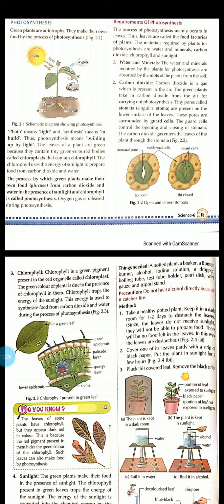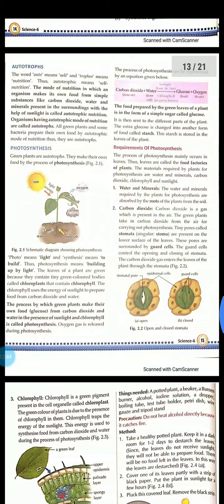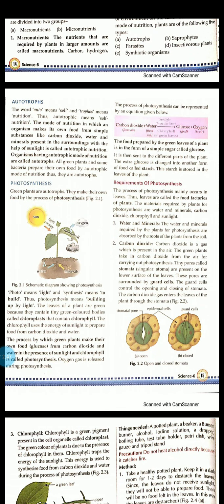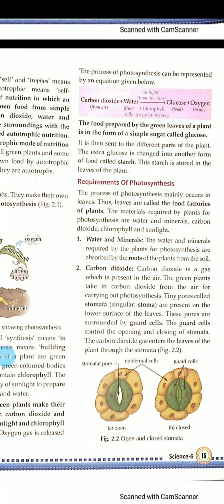The process by which green plants make their own food, glucose, from carbon dioxide and water in the presence of sunlight and chlorophyll is called photosynthesis. The process of photosynthesis can be represented by the equation: carbon dioxide plus water, in the presence of sunlight and chlorophyll, is converted into glucose plus oxygen.